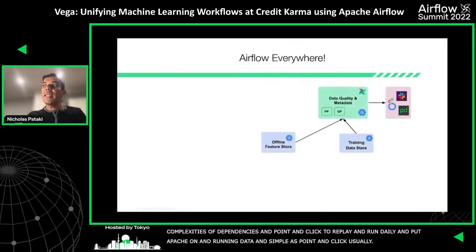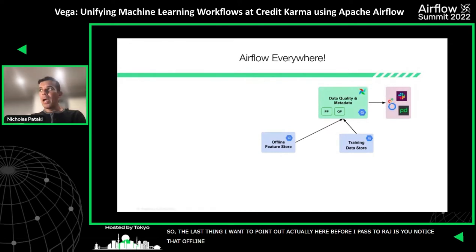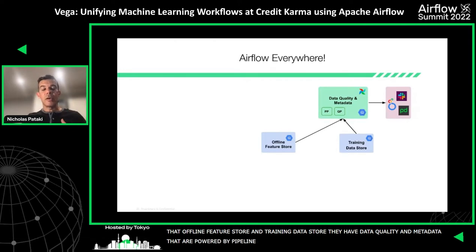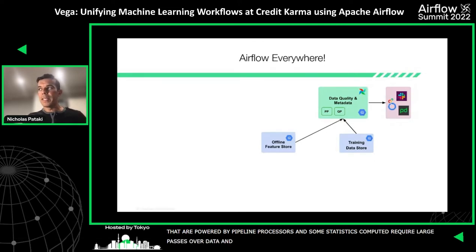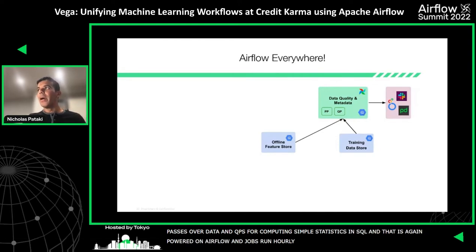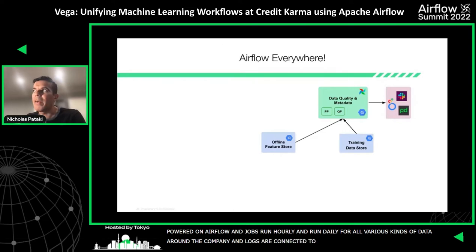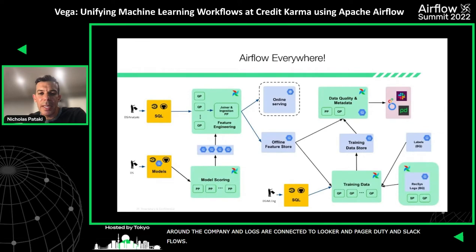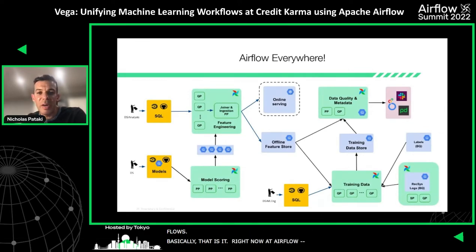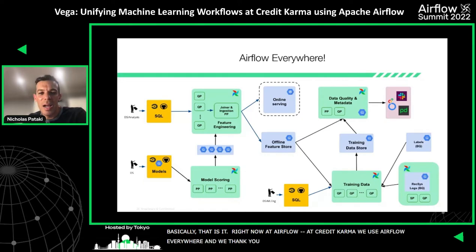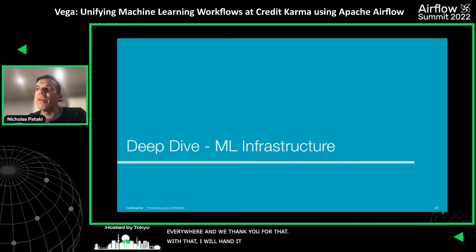The last thing I want to point out before passing to Raj: our offline feature store and training data store also have data quality and metadata. These are powered by Pipeline Processors for statistics that require large passes over data, and also QPs for computing simple statistics in SQL. All of this is powered on Airflow. These jobs run hourly, they run daily, for all various kinds of data around the company. The logs are connected to Looker, PagerDuty, and Slack for alerts. Right now at Credit Karma, we basically use Airflow everywhere. With that, I'm going to hand it off to Raj to discuss our infra in a little bit more detail.